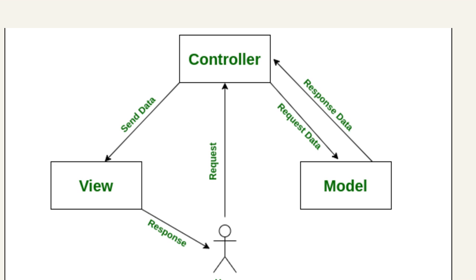In the image we can see that the user request goes to the controller. The controller requests data from the model. The model responds with data to the controller. Then the controller sends data to the view, and the view displays the response to the user. This is the flow of the MVC pattern.